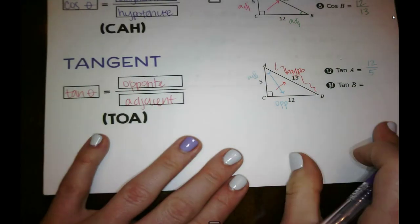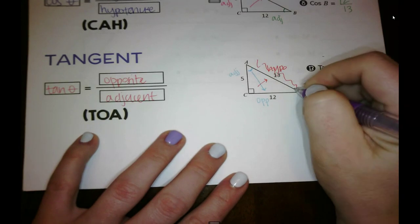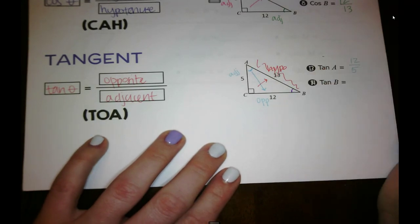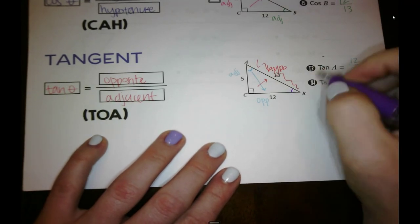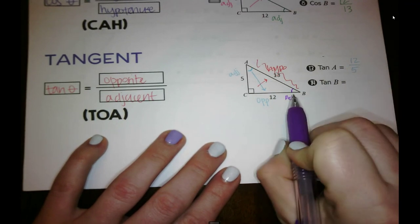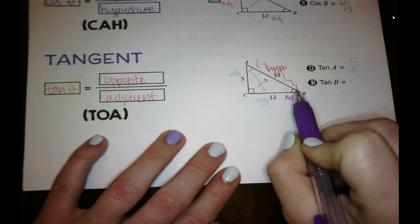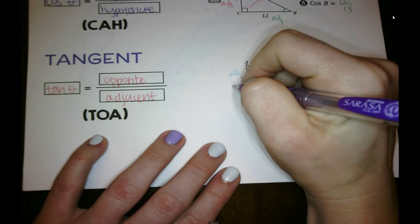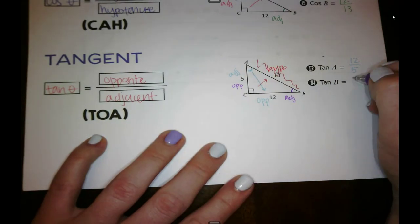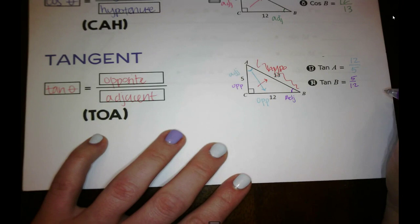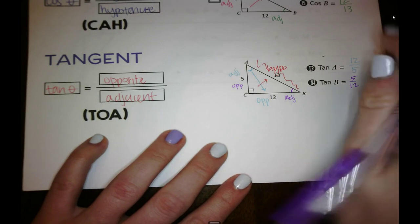All right, let's look at B, tangent of B then. Now this 12 would be adjacent because it's next to that angle. And then opposite would be 5. So tangent of B is 5 over 12.